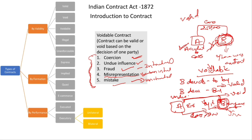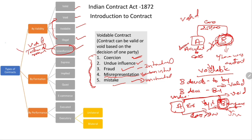We discussed three important types under validity: valid, void, and voidable. Illegal contracts are also part of void contracts. The last one is unenforceable contract — it is same as a valid contract in all respects, but because of some technical reasons (e.g., submission on wrong date), the contract becomes unenforceable. It is not a very important category. So the important ones are: valid, void (with illegal as subset), and voidable.